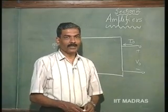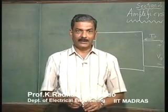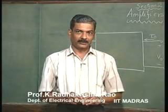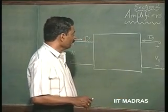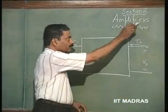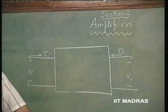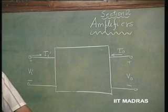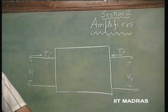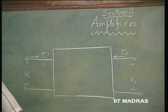In section one, we had discussed diode, basically a two terminal element. In this section, section two, we will be discussing amplifier, one of the important signal processing element blocks. As against the diode, which is a two terminal element, this has to be a three terminal element.